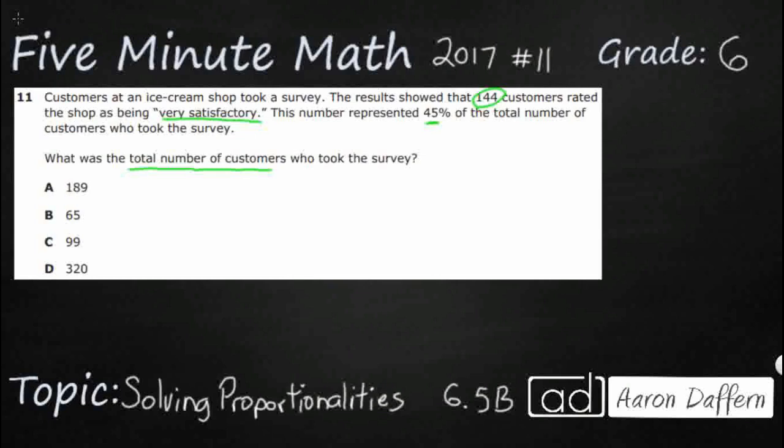Well first what we can do is we can estimate this and we can actually probably get a pretty solid guess as to our answer. If 144 customers equals 45%, 45% is just a little bit below half. So if we were to double that to 90%, that's almost 100%, and double this and we're going to get 288. So a little bit more than 288 makes me think it might be D, 320, because that's the only one that's a little bit bigger. But how do we know for sure?